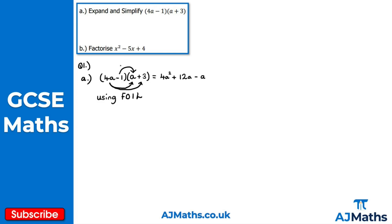Then the L in FOIL means multiplying the last term in each bracket: minus 1 times positive 3 gives minus 3. Now we simplify by collecting like terms: 4a squared, then 12a minus a gives plus 11a, and finally minus 3. That's the solution to part a.